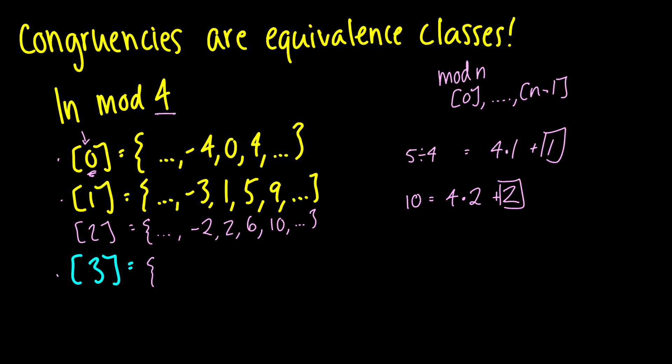And for 3, this should be pretty easy to generate now, negative 1, 3, 7, 11, so on and so forth. And if we take the number, let's take 15, we see this as 4 times 3 plus 3, which is a good representation of the equivalence class.